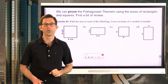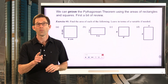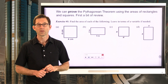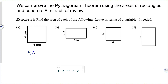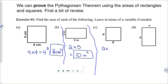C and D, which have only variables and no numbers, you'll have to leave their areas in terms of those variables, and that's okay. For letter A, the area is just 4 times 4, or 4 squared, and that'll be 16 square centimeters. For letter B, that area is going to be 2 times 5, or simply 10 square inches. For letter C, the area is just A times A, or A squared.